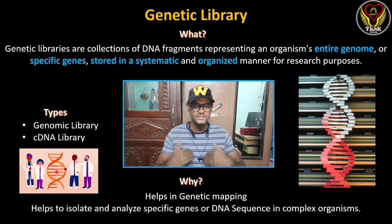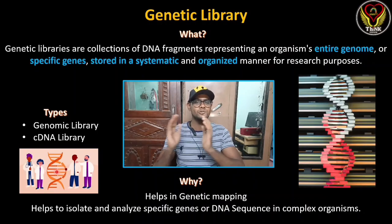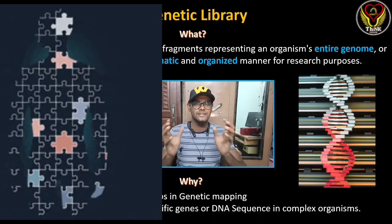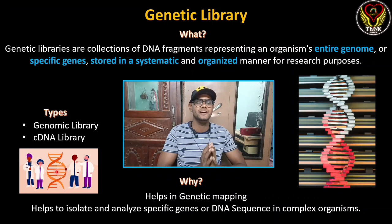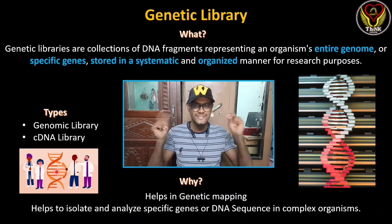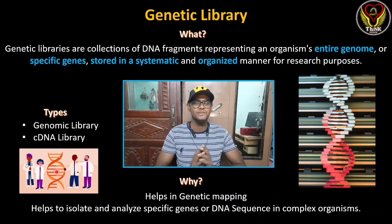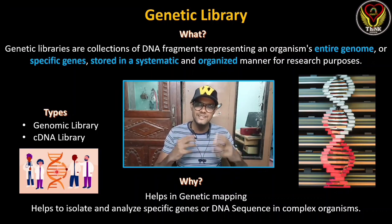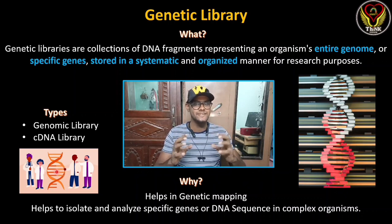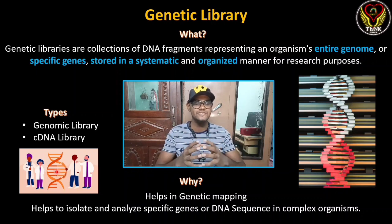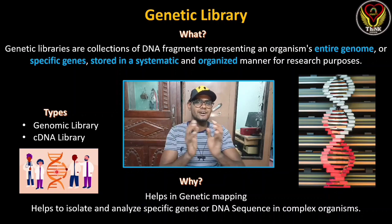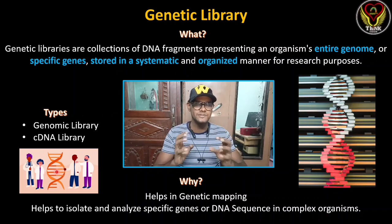Similarly, in genetics, we are storing our genes. We collect all of our genes and arrange them — that is the genetic library. This is the simple definition. A genetic library is a collection of DNA fragments representing an organism's entire genome, and it will be able to organize specific genes for our future purposes.